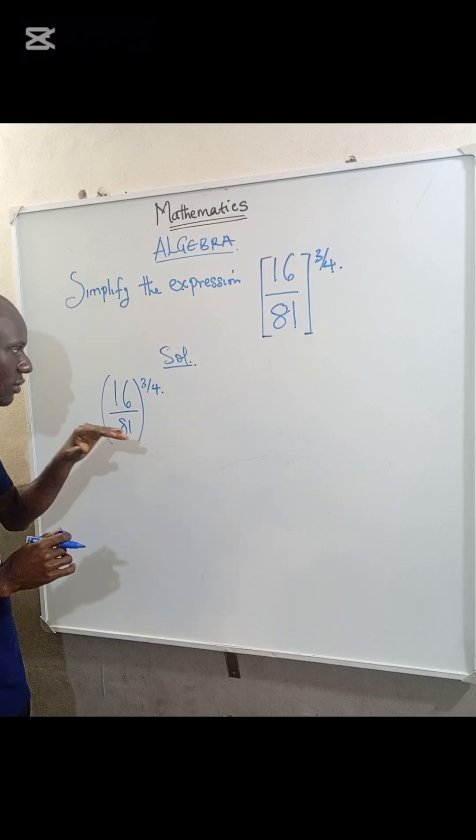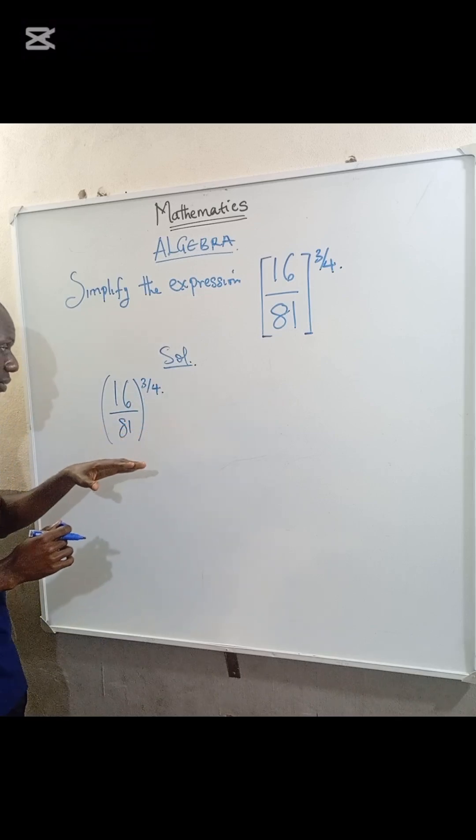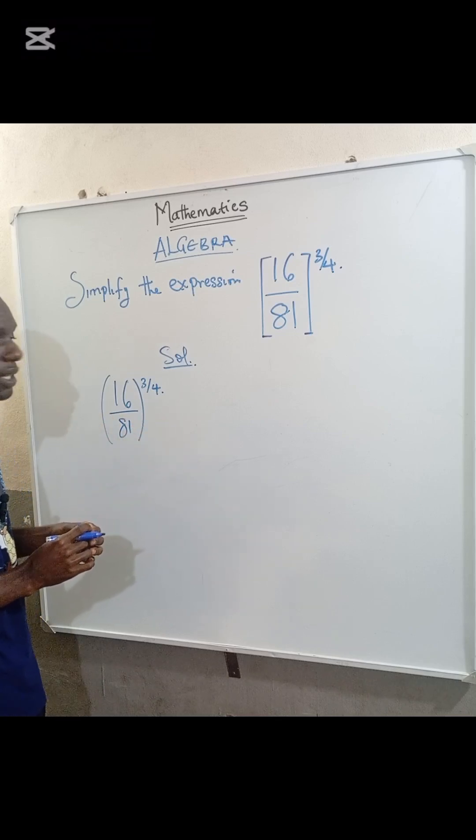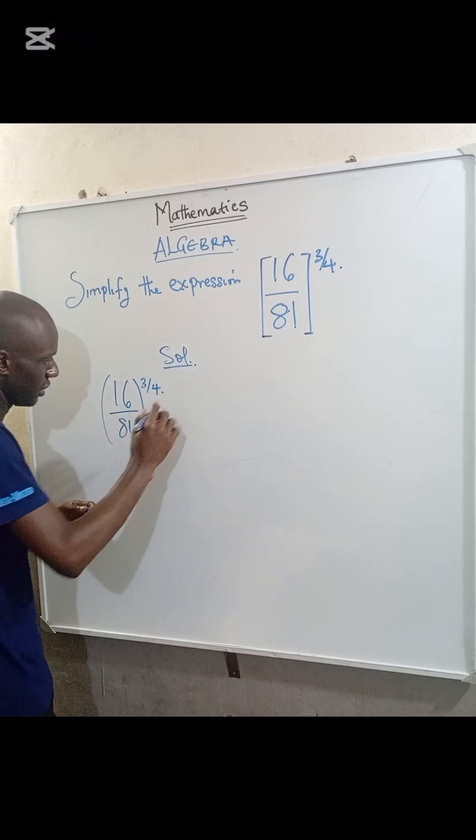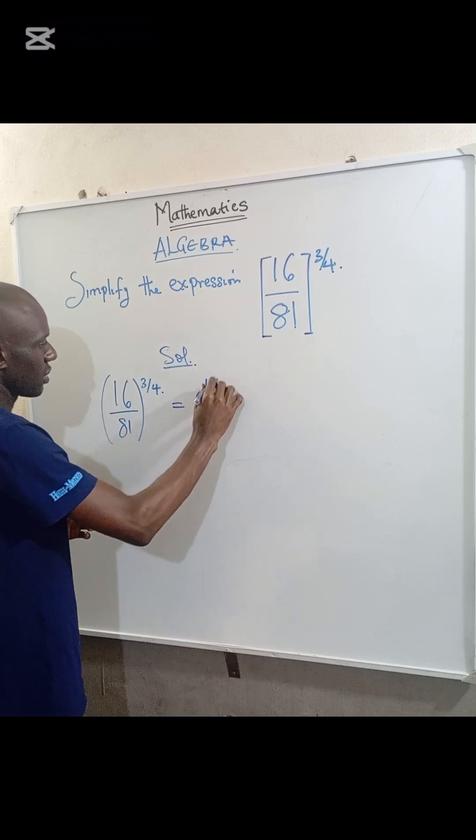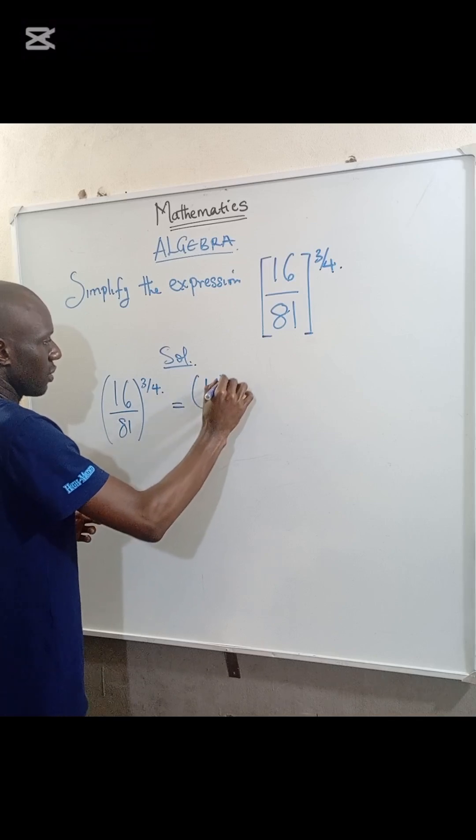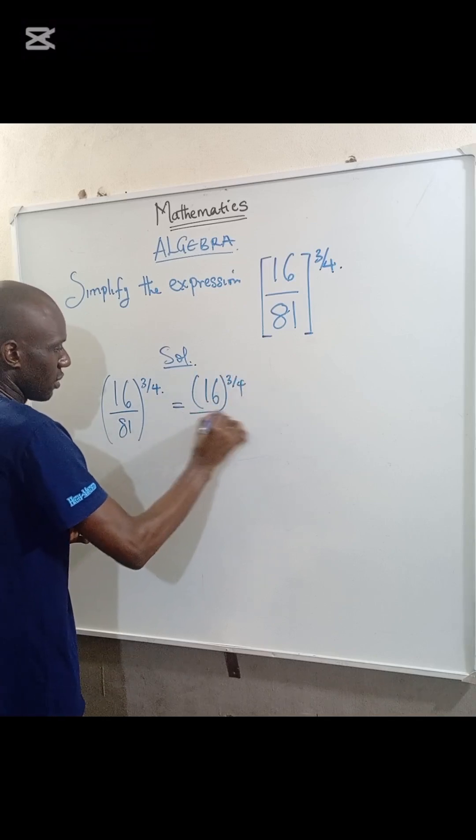The first thing we do here is to distribute the power to each of the numbers. So this becomes 16 to the power of 3/4 divided by 81 to the power of 3/4.